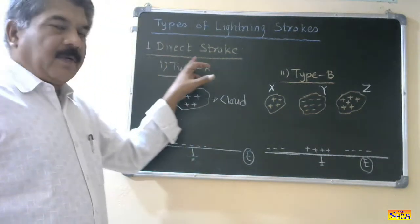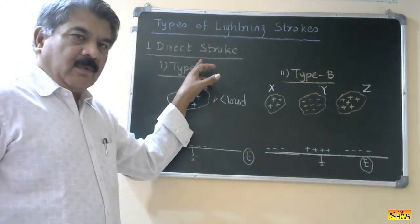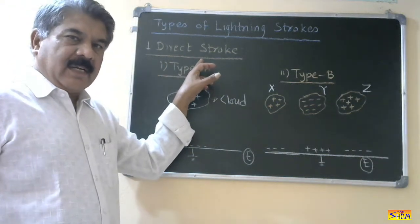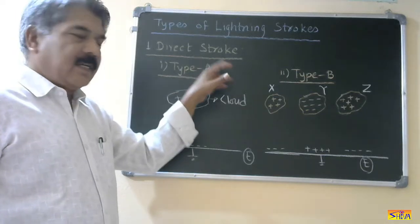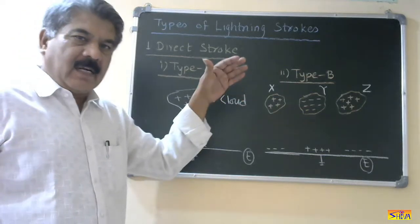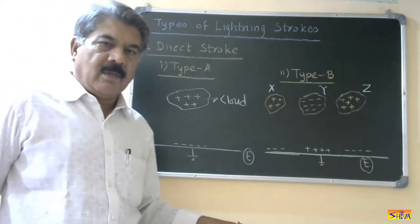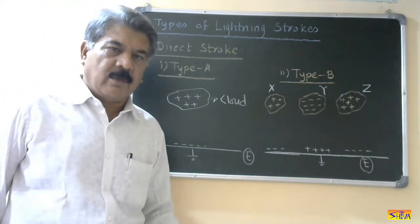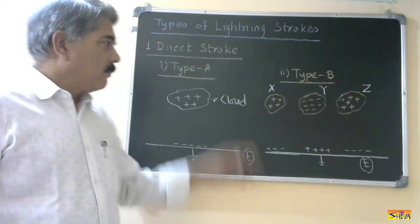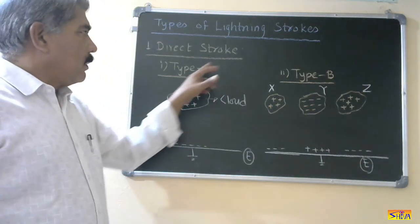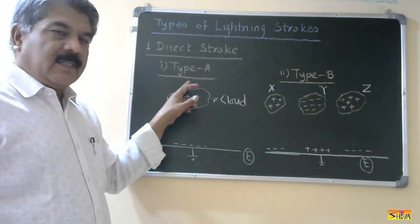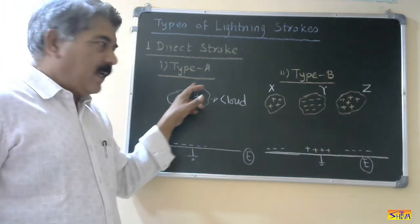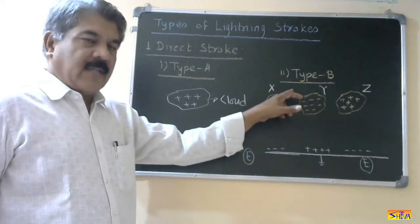In the first category we have direct strokes. Direct strokes are those which are directly on the earth object. They are classified into two categories: Type A and Type B.